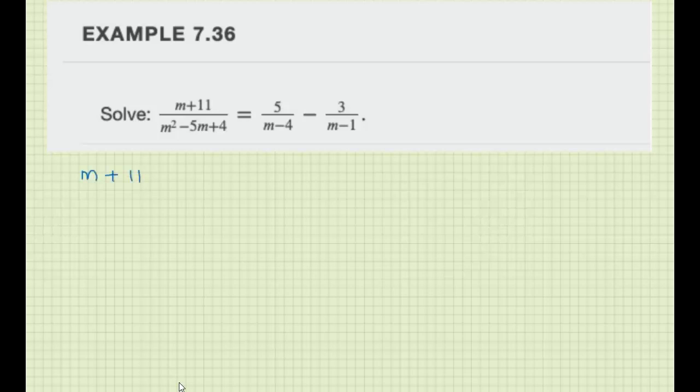So we have m plus 11. This factors as m minus 4 and m minus 1. And this is 5 over m minus 4 minus 3 over m minus 1.